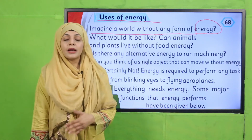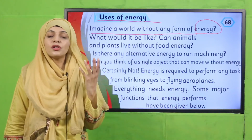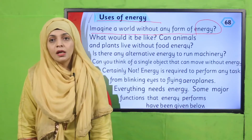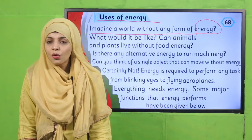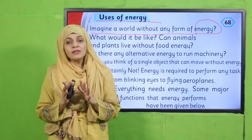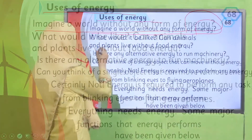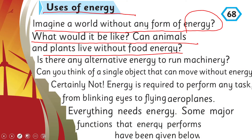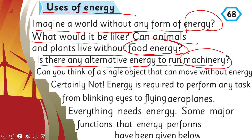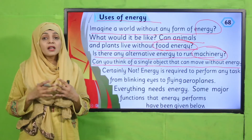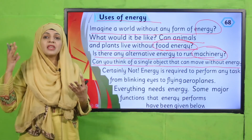Bhoat saare kaam jo hain aapke ruk jaate hain and it becomes impossible to work. Agar natural sources of energy jaise ke suraj bhi aapke paas nahi hain, toh ye duniya bilkul andheri ho jayegi — plants kaise grow karenge, roshni kahan se aayegi, heat kahan se aayegi? Can animals and plants live without food energy? Of course not. Is there any alternative energy to run machinery? Nothing can move, nothing can work without energy — everything needs energy to work.